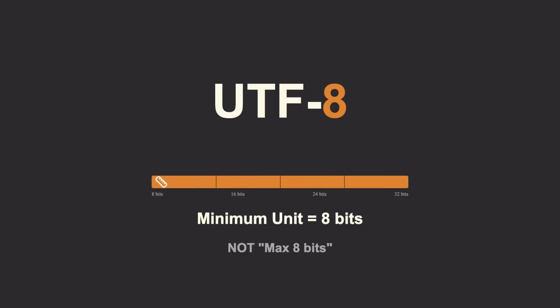Myth: UTF-8 means 8-bit encoding. No. The 8 means the minimum unit is 8 bits — UTF-8 can use up to 32 bits, 4 bytes, per character. It's 8-bit based, not 8-bit limited. And an important point: UTF-8 is 100% backwards compatible with ASCII. Every old ASCII file from 1970 is valid UTF-8 — like making a new phone that can still call rotary phones.